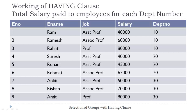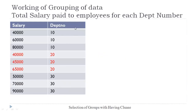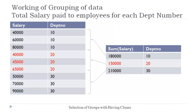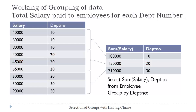Here we have to find the total salary paid to employees for each department. Salary and department number columns will play an important role. Let's simplify this data by selecting only these two columns. The first step is to make a grouping on the department number column — three groups will be formed: one for department number 10, another for 20, and a third for 30. Then, after creating these groups, the SUM salary function will be applied to each group to find the total salary corresponding to each department.